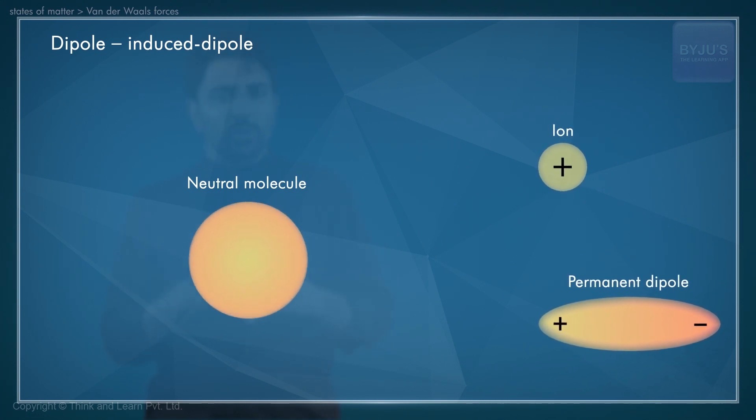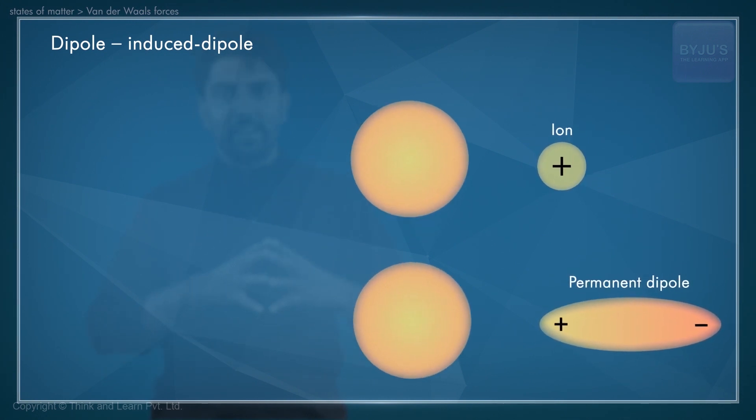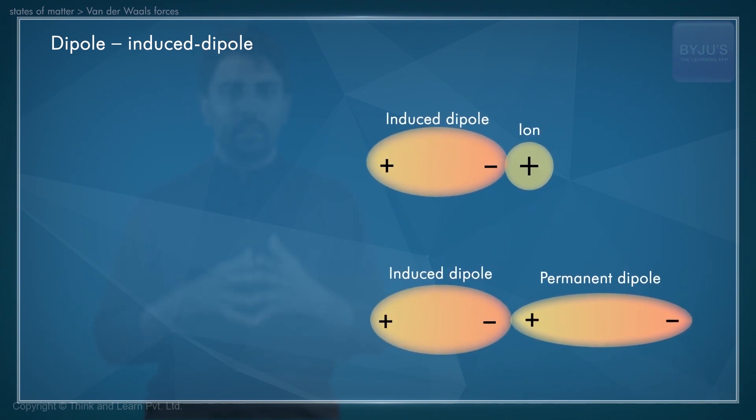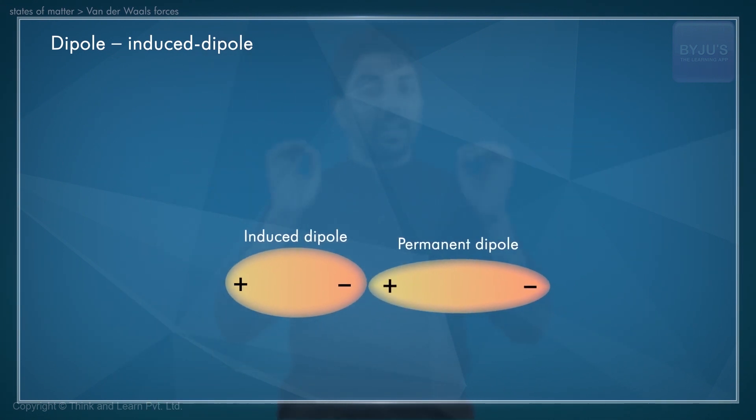Now, because of the charged separation, the electron distribution of the otherwise neutral entity will be distorted by the electrostatic force exerted by the charged species. Thus, a charged species induces or encourages the formation of a dipole on an otherwise neutral atom or non-polar molecule.